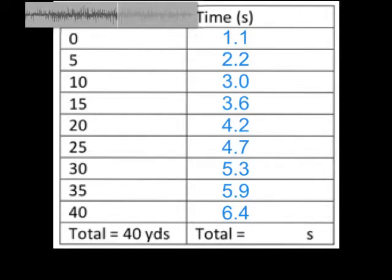So, this was the data that was collected after analyzing the run using Coach My Video: 1.1, 2.2, 3.0, 3.6, 4.2, 4.7, 5.3, 5.9, and 6.4. This gave a total of, if I take my 1.1 and my 6.4, 6.4 minus 1.1 is going to give me 5.3 seconds. These two numbers, 40 yards and 5.3 seconds, are going to be used later on whenever we start answering the questions.